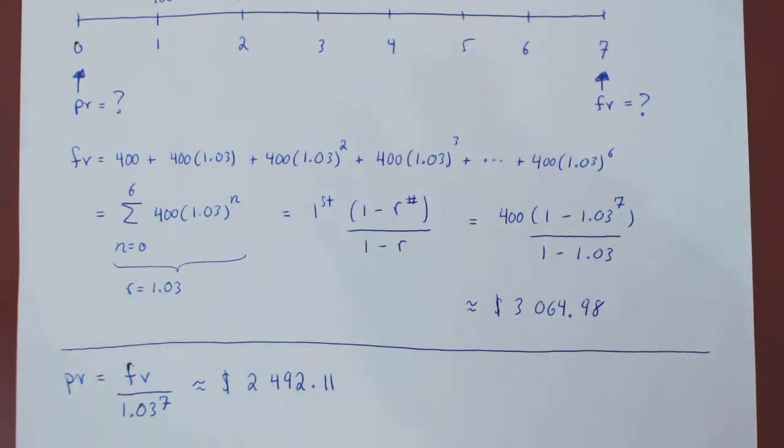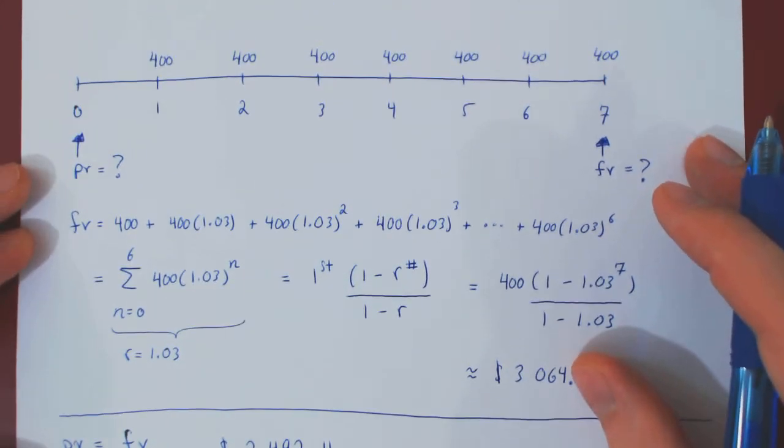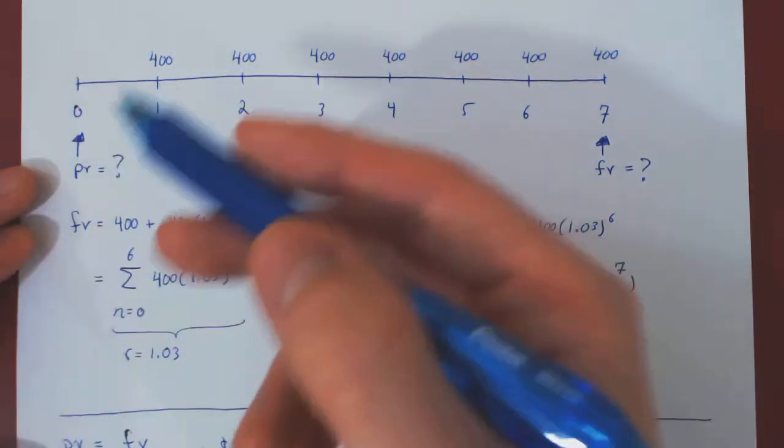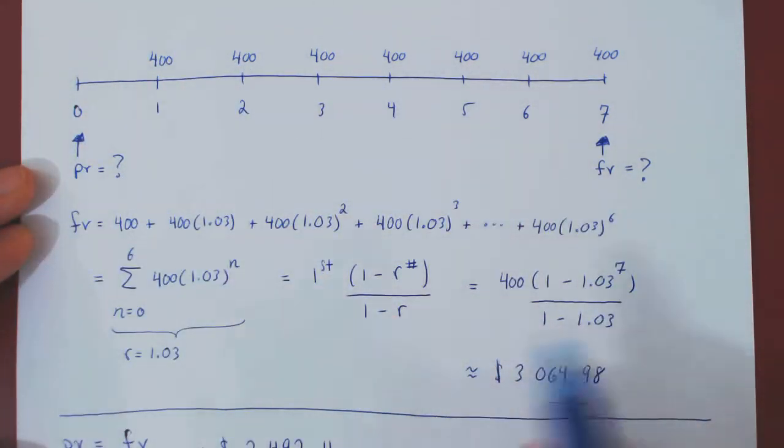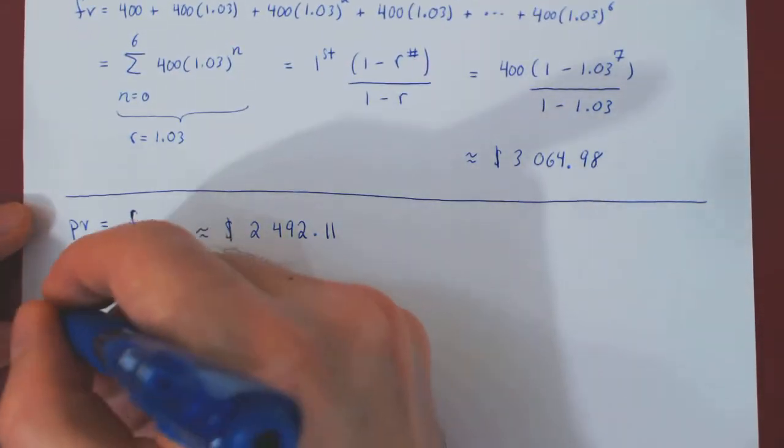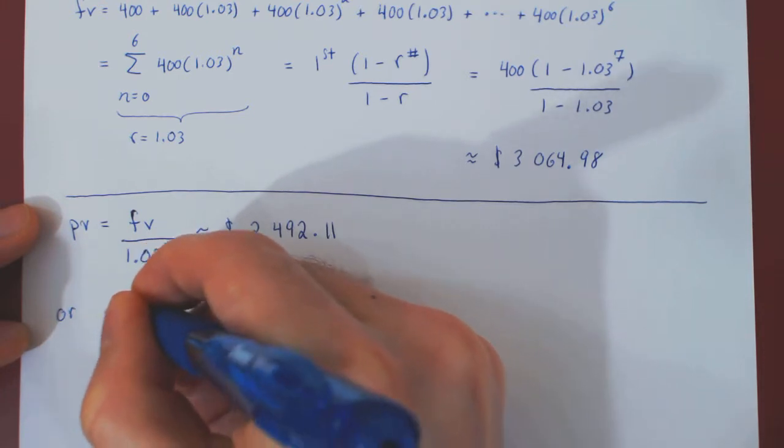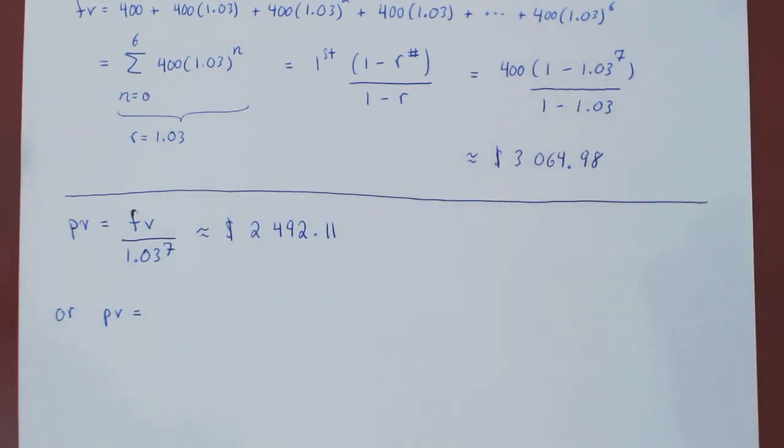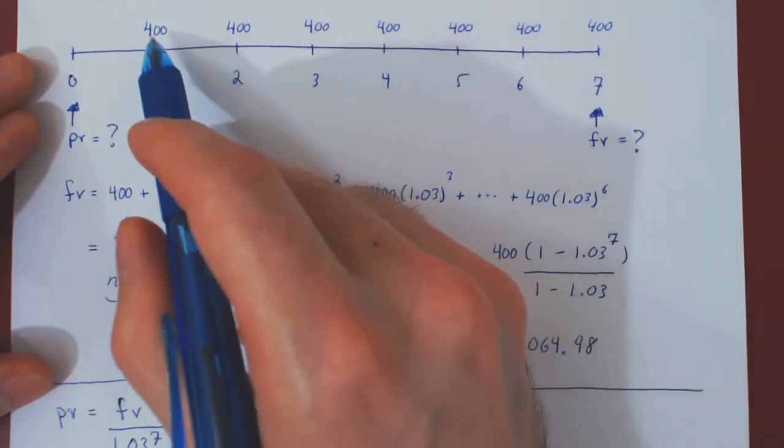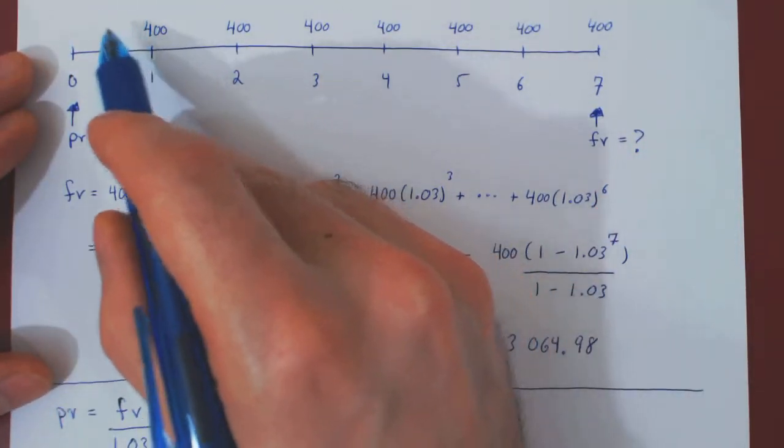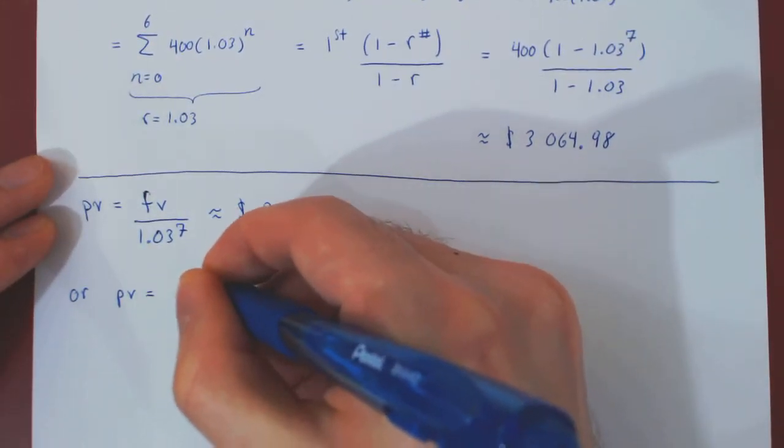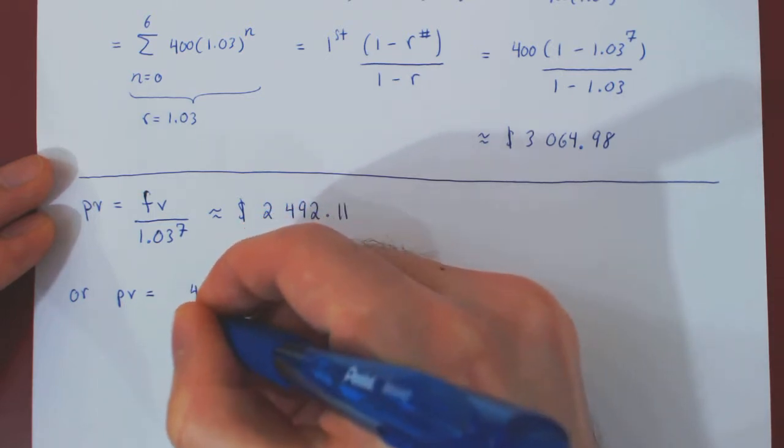Now, let's look at this from a different angle, bringing back each individual investment to time 0, and we'll see that we obtain the exact same present value. So, this is the short resolution. We have to bring back this $400 in time by one year. So, this will now be worth, at time 0, 400 divided by 1.03.